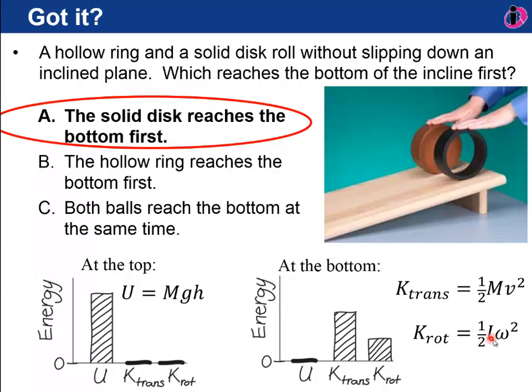Now the hoop has more of its energy, a higher value of I. So if they have the same constraint of rolling without slipping, what's different about the hoop is that more of its energy has to go into rotational kinetic energy, and so that has to decrease from the translational. It's going to slow it down more. So that means the hoop is going to go slower, since its rotational inertia is higher relative to its mass than for the solid disk.